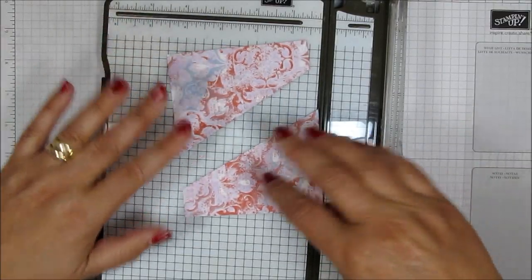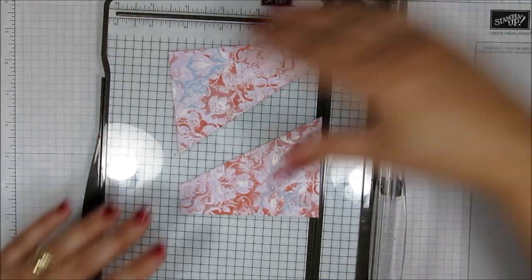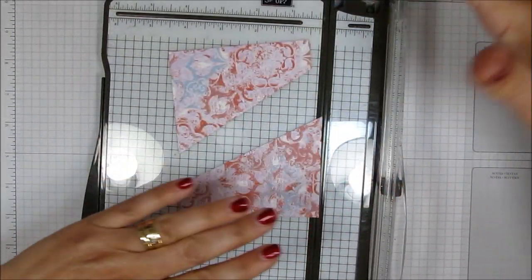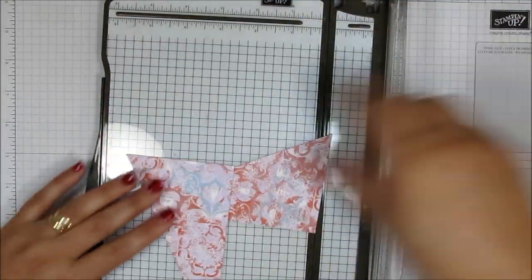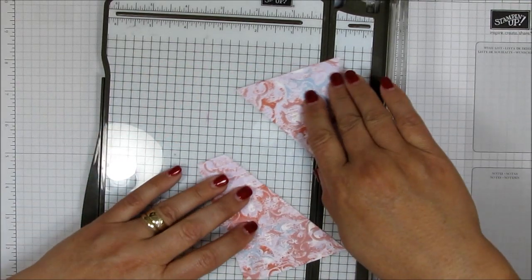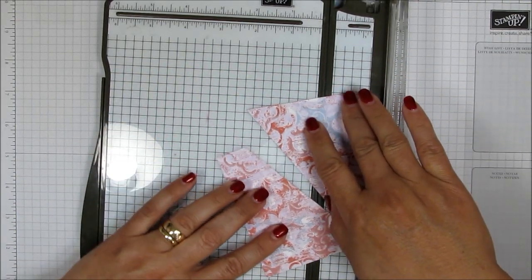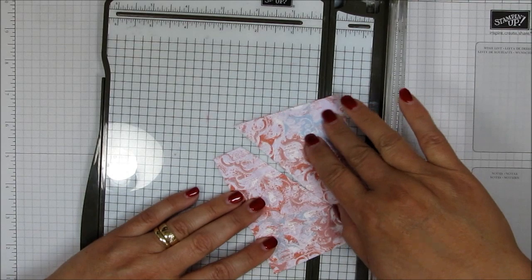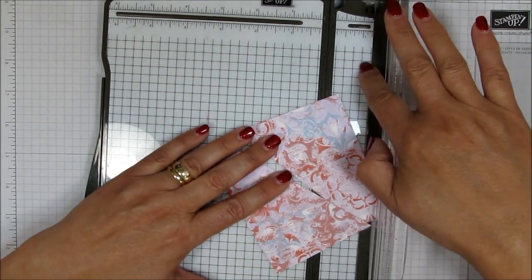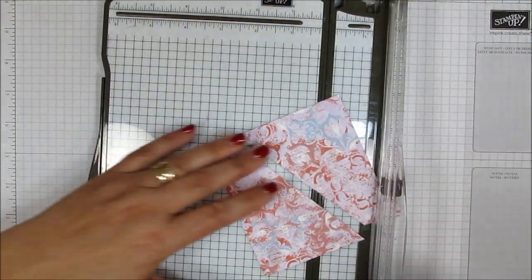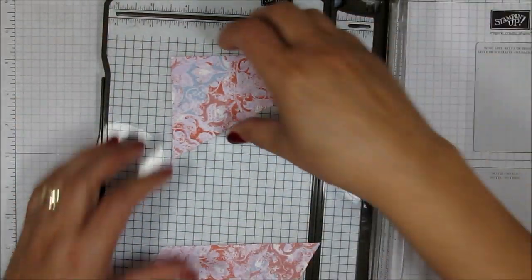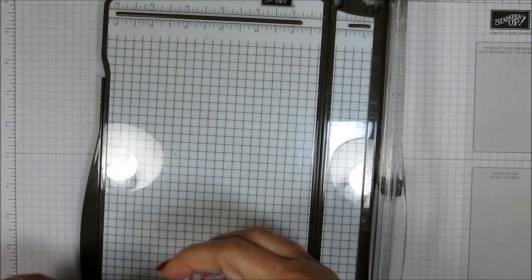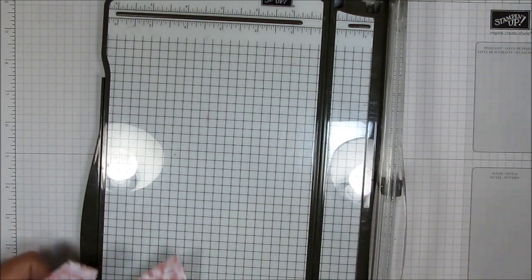But if you don't want your slant to go from this way to that way or up from down to up going that direction, then what you'll do is you'll just do the opposite. Line up this part to the seven eighths of an inch and this part to the seven eighths of an inch. And then your slant will go the other way. So I want my slant to go this way. So that's why I did that. And I just kind of taped it together just temporarily. So that's what you do with your trimmer.